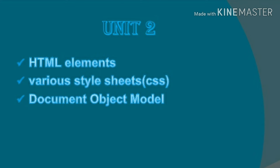Now we go to the second unit. The second unit is a very simple unit, and there are three questions — we can score marks. The first important question is HTML elements. You can use tags: ordered, unordered list, frames, tables, and bold. You can see the Document Object Model and various style sheets or CSS elements. There are three types of CSS elements.